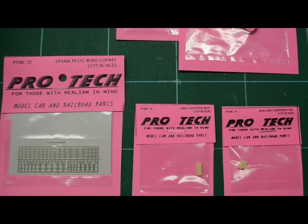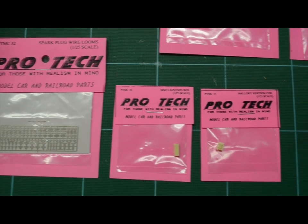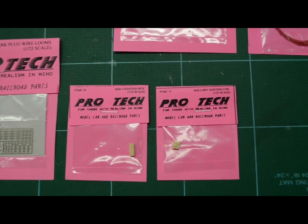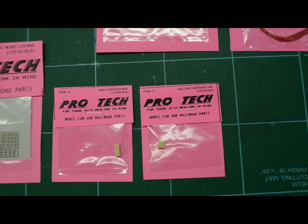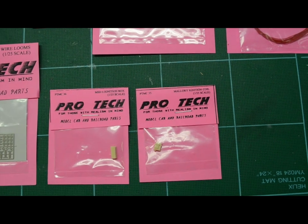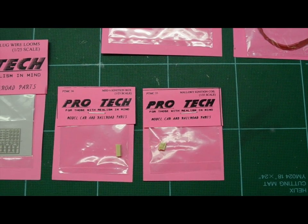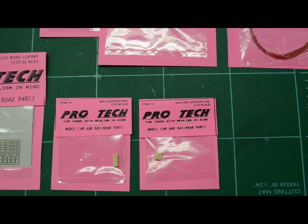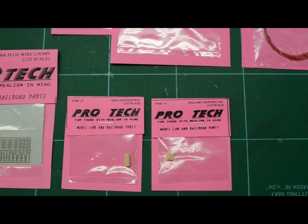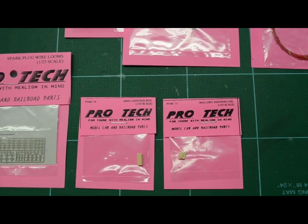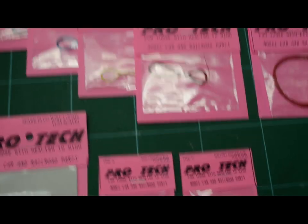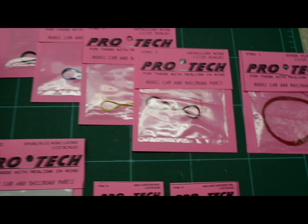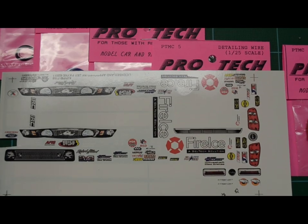...we've got a MSD ignition box, PTMC36 on the left, and then on the right, PTMC35 is the ignition coil. This is going to be the MSD items we're putting in, and then also some Slix decals for the MSD logo.